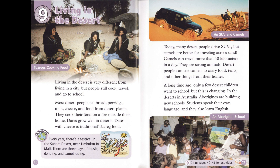Today many desert people drive SUVs, but camels are better for traveling across sand. Camels can travel more than 40 kilometers in a day and are strong animals — desert people use them to carry food, tents, and other things. A long time ago, only a few desert children went to school, but this is changing. In the deserts in Australia, Aborigines are building new schools where students speak their own language and also learn English.